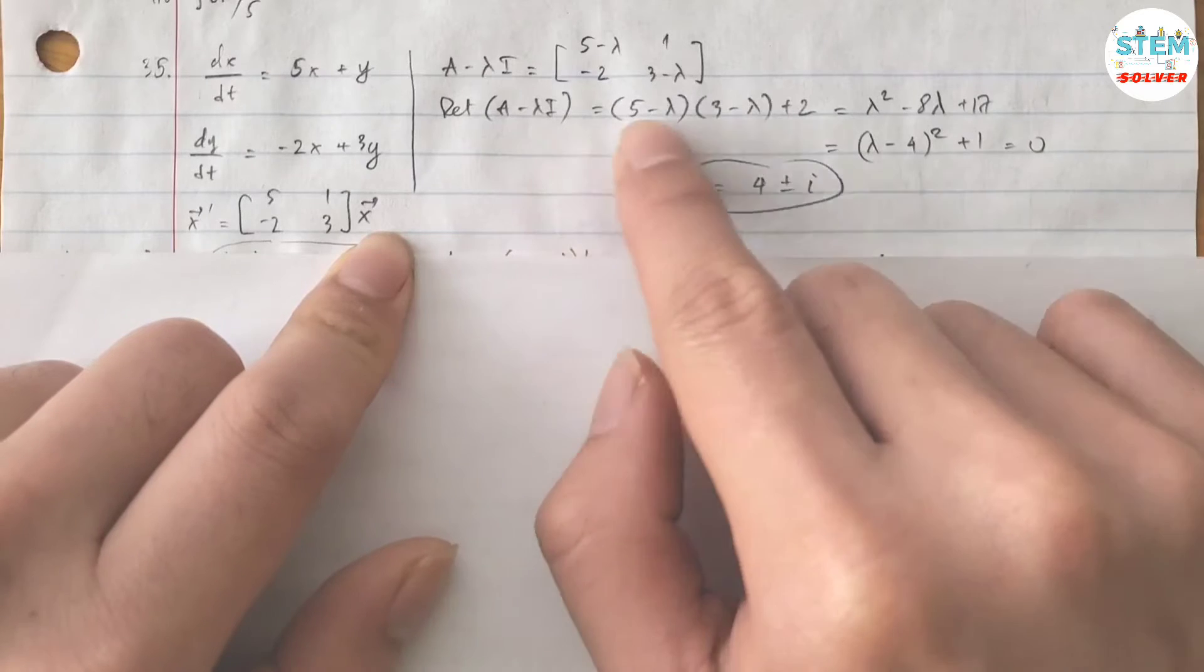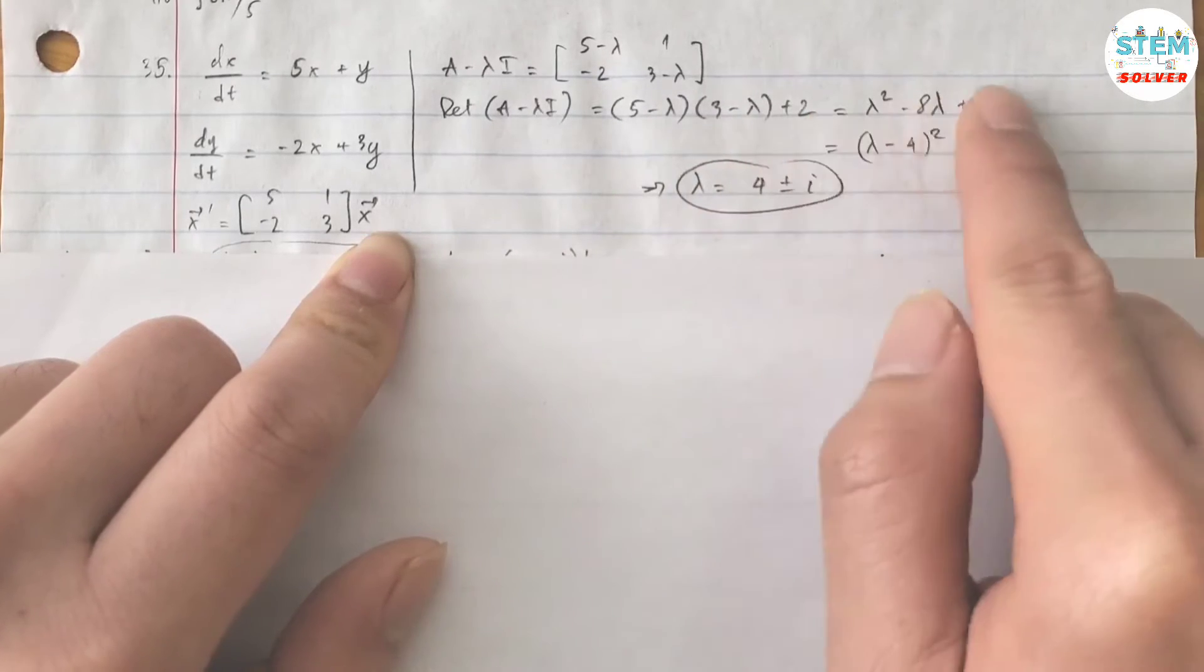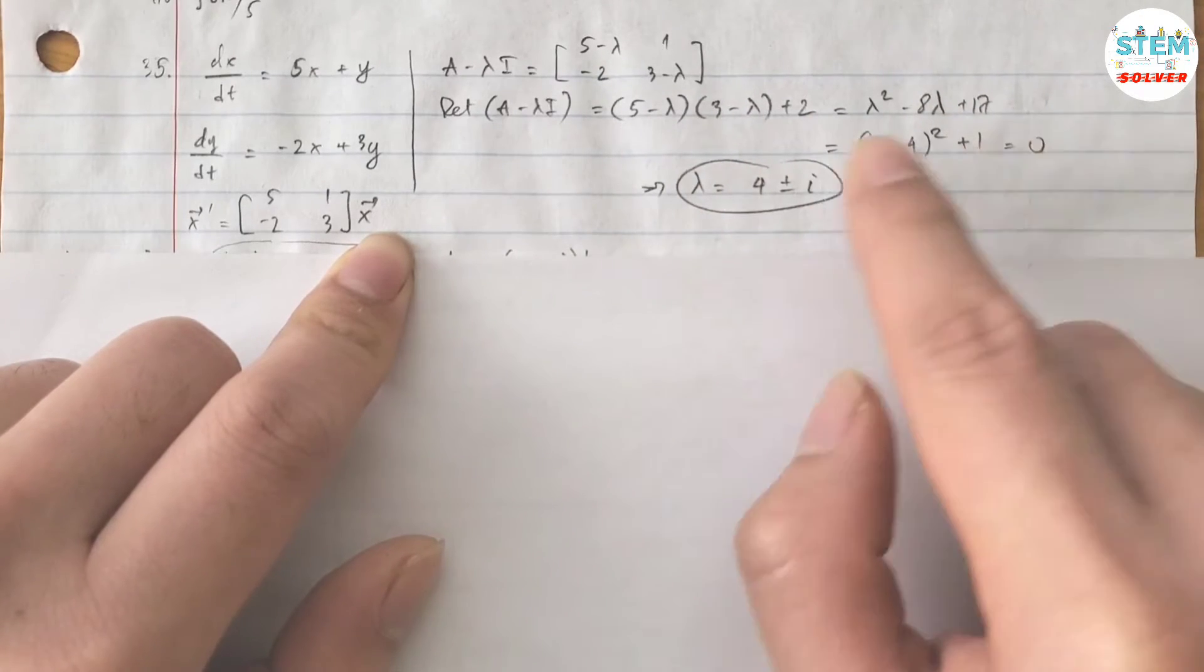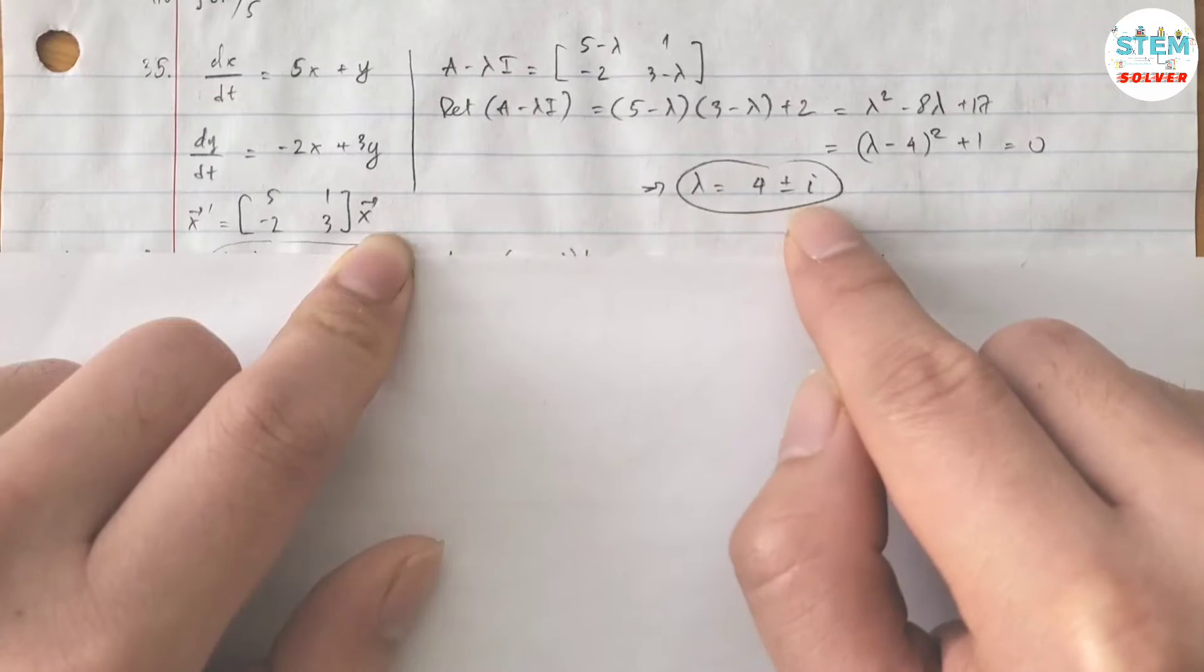It gives you this. Just foil this out, simplify it, set it equal to 0. Solve for lambda, I got lambda equals 4 plus or minus i.